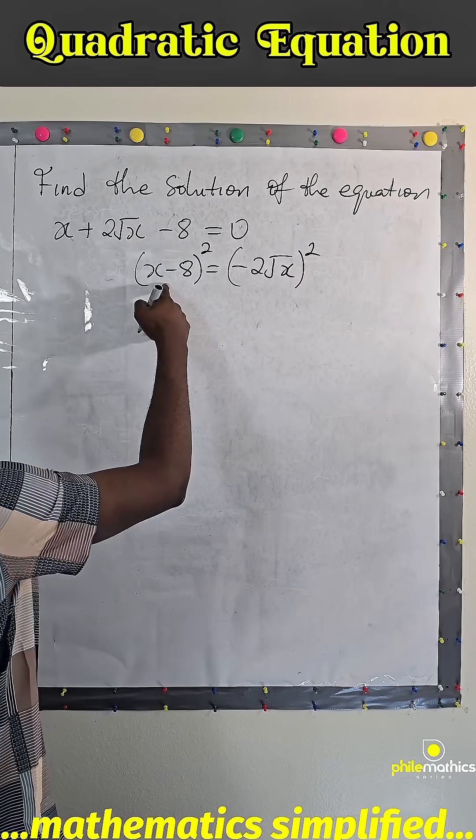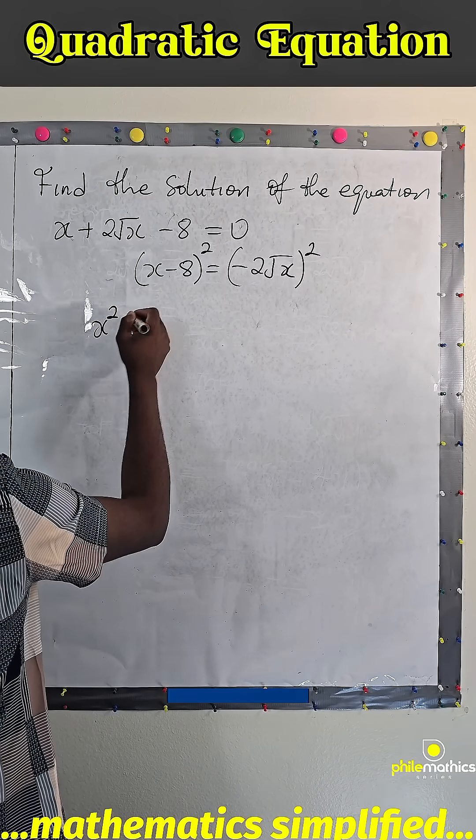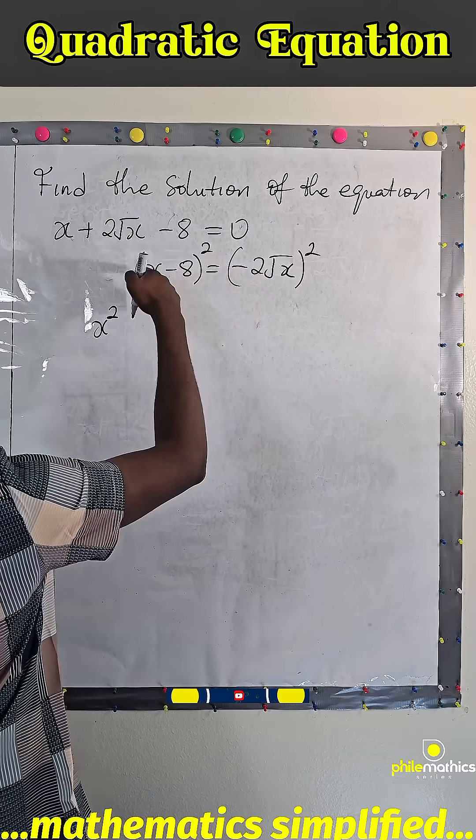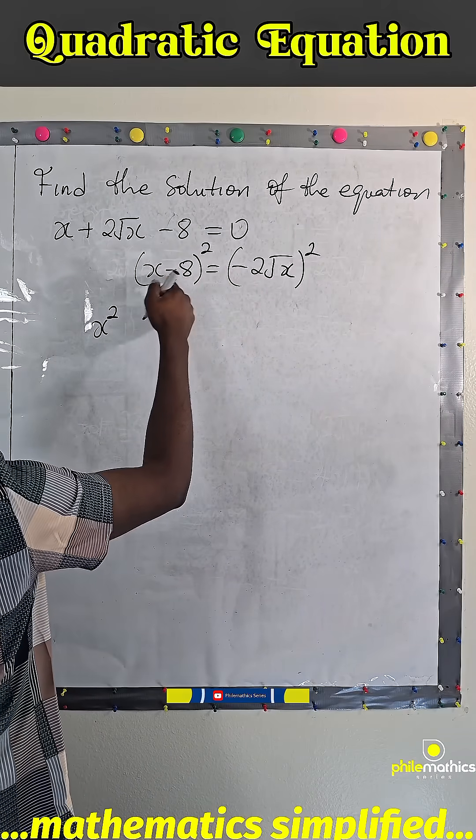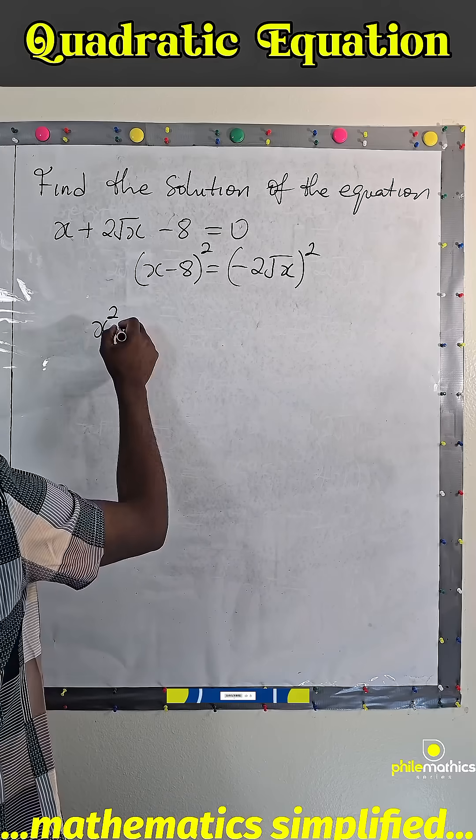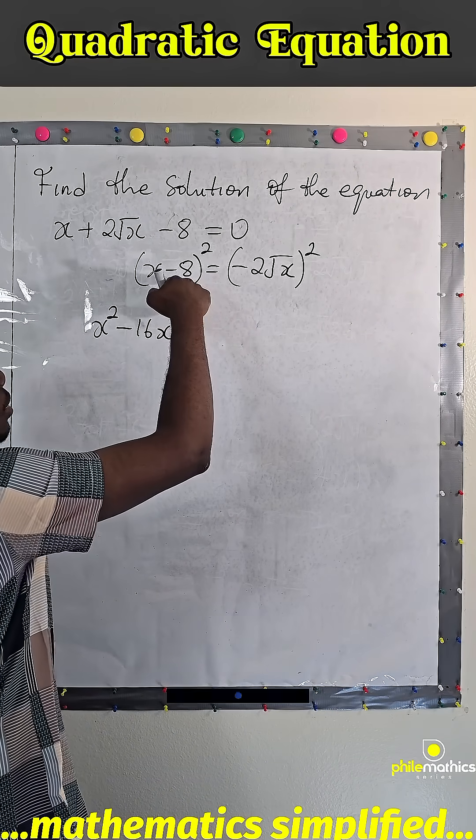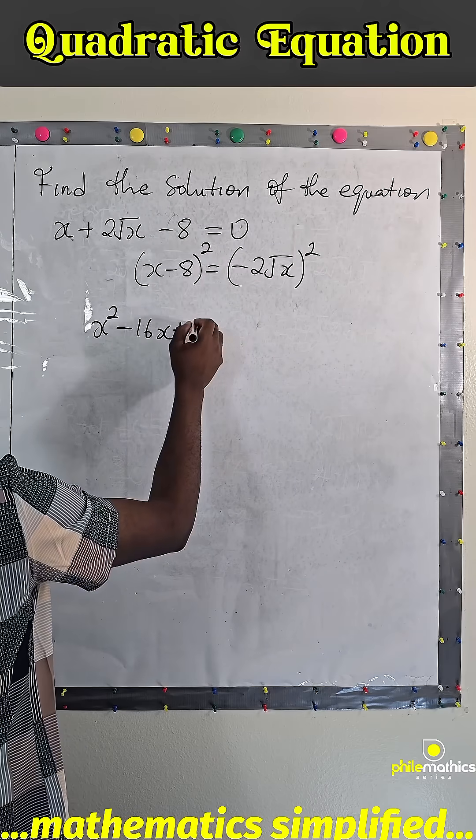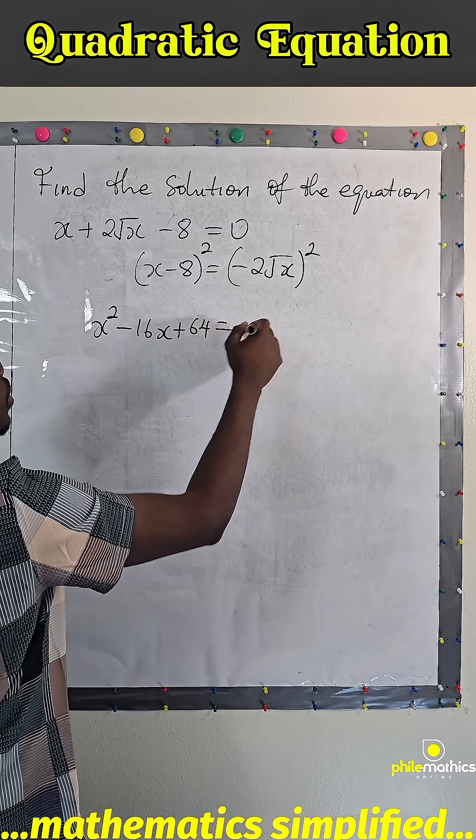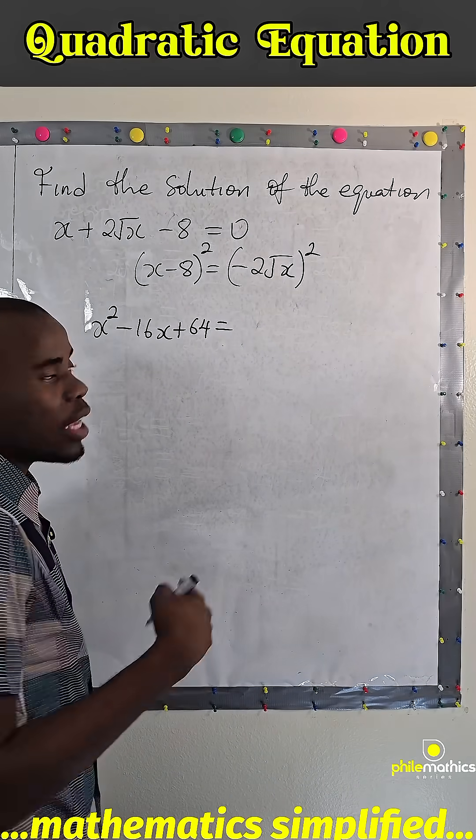So what I want to do next is to square both sides. And if I square both sides, the square of this is simply this square plus this times this, which is 2 times x is 2x, and minus 8 is minus 16x, and plus minus 8 squared which is plus 64. And minus 2 squared is 4 because minus 2 times minus 2 is 4.